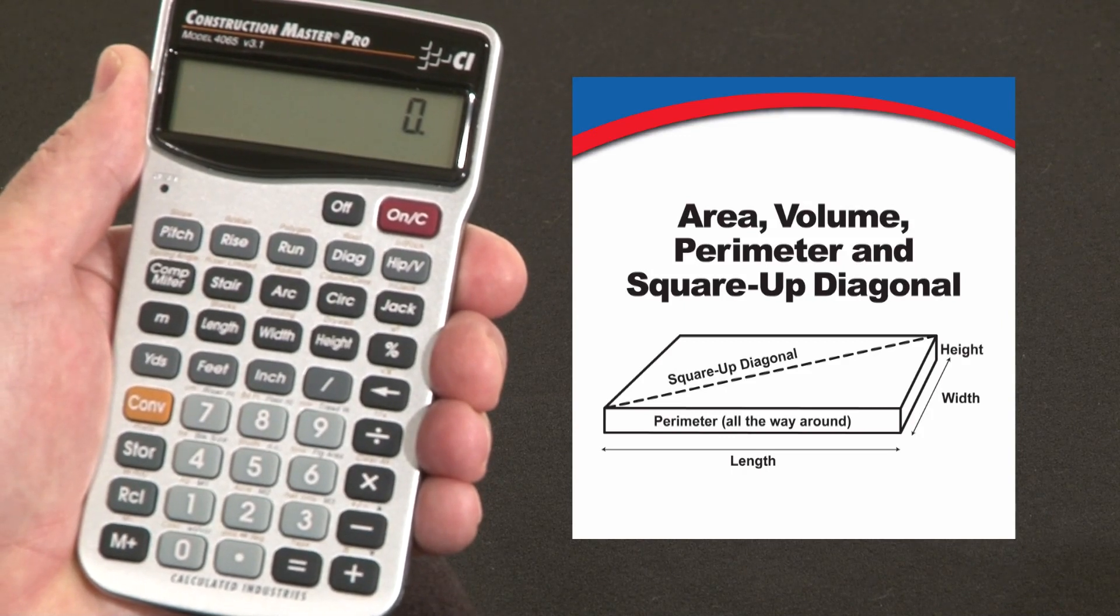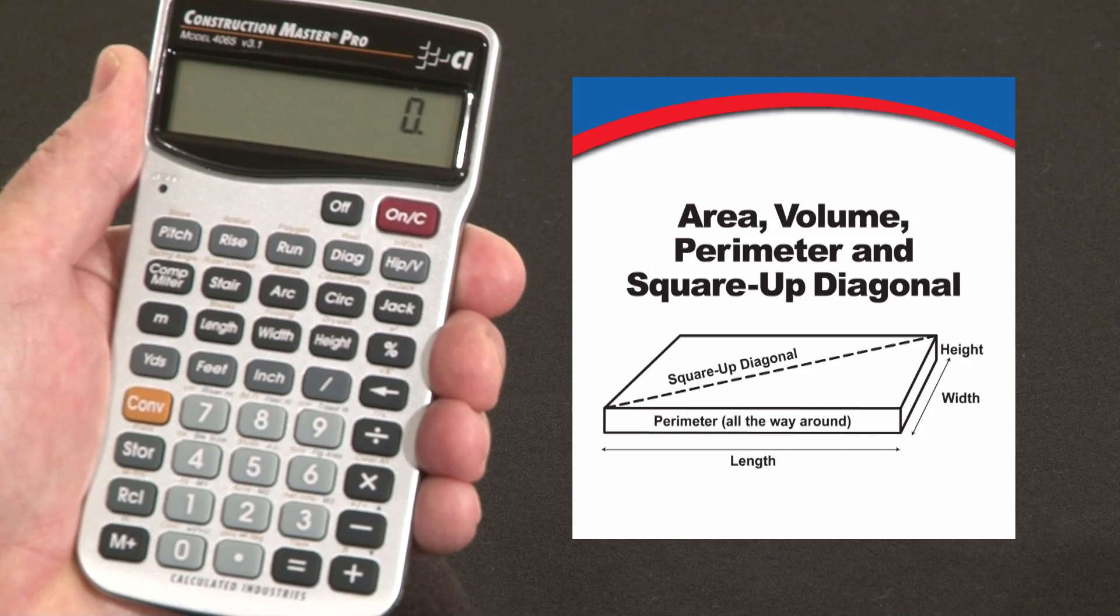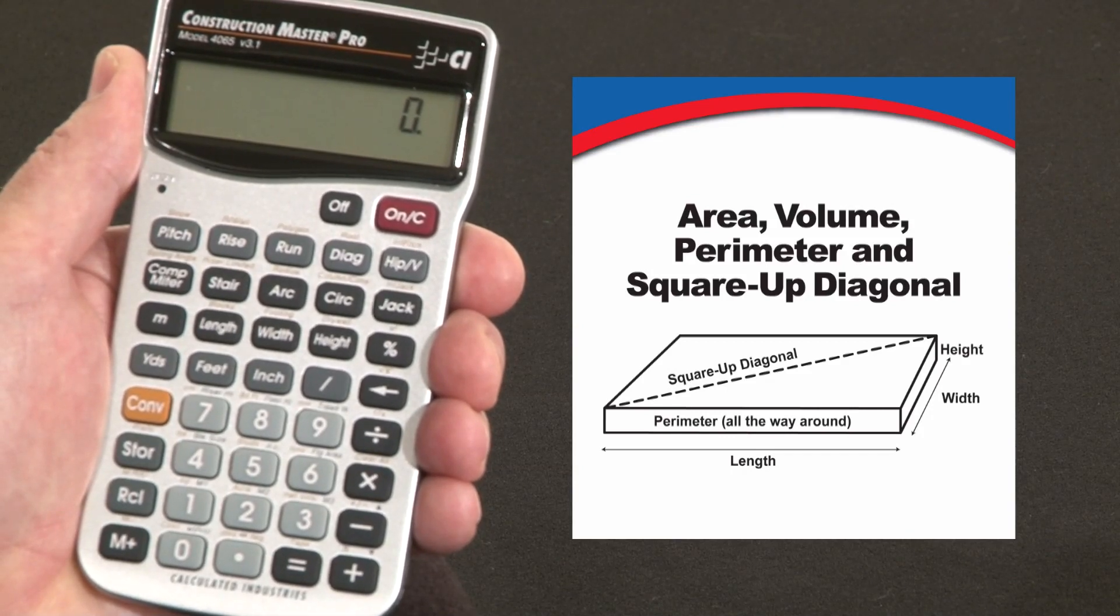And keep in mind, the keystrokes for this are exactly the same if you're using the Construction Master Pro desktop model. These functions give you a whole series of answers from just one input.